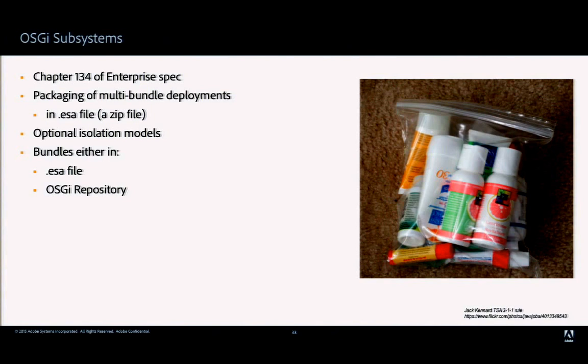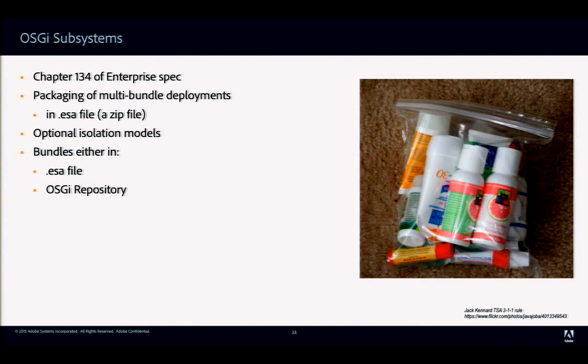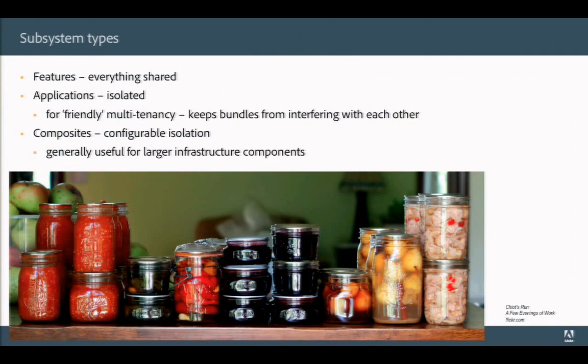Subsystems also support isolation models. The ESA file always contains a descriptor. Two deployment models exist: you can include all bundles inside the ESA file for a self-contained archive, or you can list bundle names in the descriptor and pull them from an OSGi repository at deployment time. You can also mix both approaches.